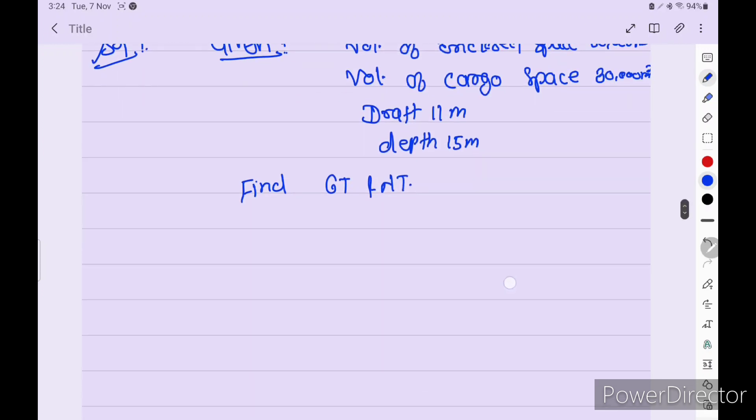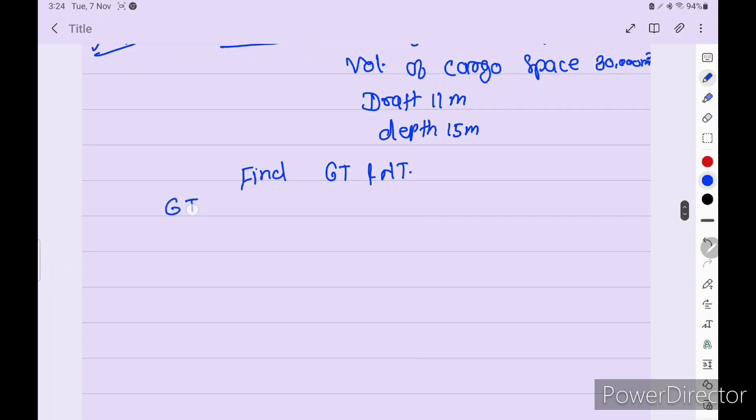First we have to calculate the gross tonnage. Gross tonnage is equal to k1 into V. What is k1? 0.2 plus 0.02 log base 10 of V. So put the value: 0.2 plus 0.02 log 50,000.